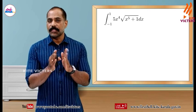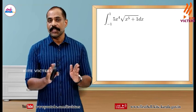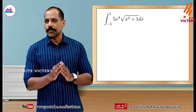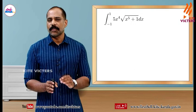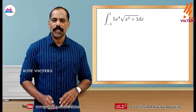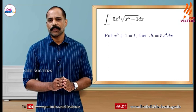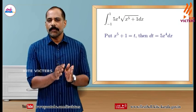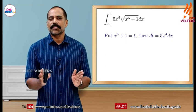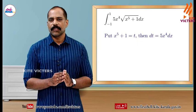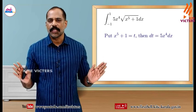The substitution method: we take root of x⁵ plus 1 and simplify it. We let root of x⁵ plus 1 equal to t. Then we differentiate the function. 5x⁴ dx is equal to dt.